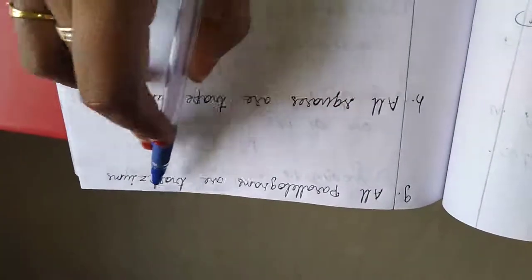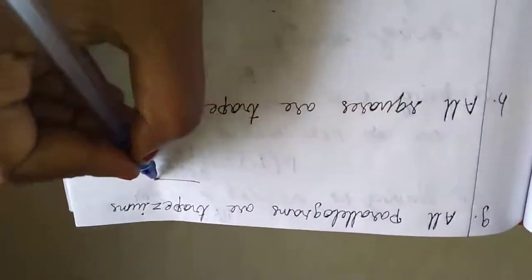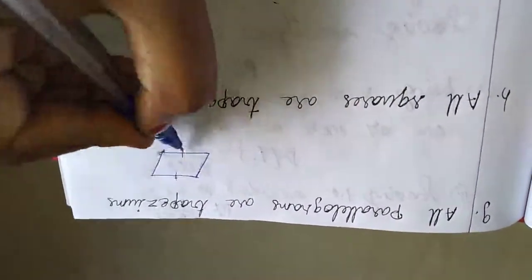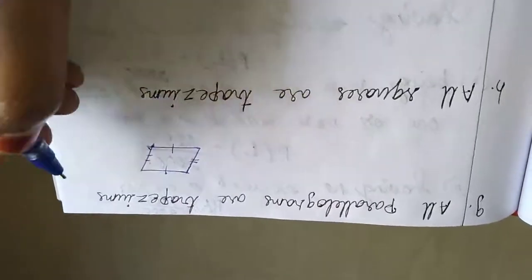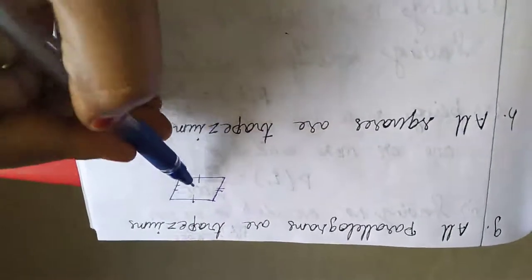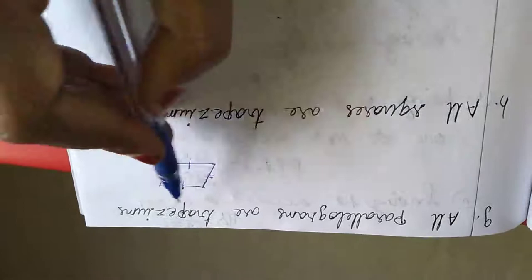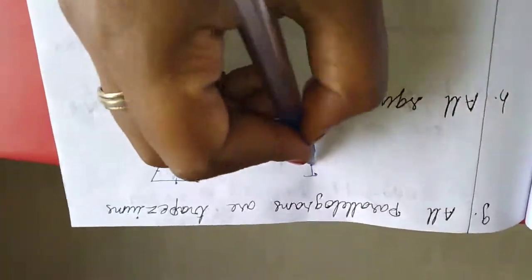Next one, all parallelograms are trapeziums. Parallelograms have opposite sides equal. Trapeziums also have opposite sides parallel, so this is true.